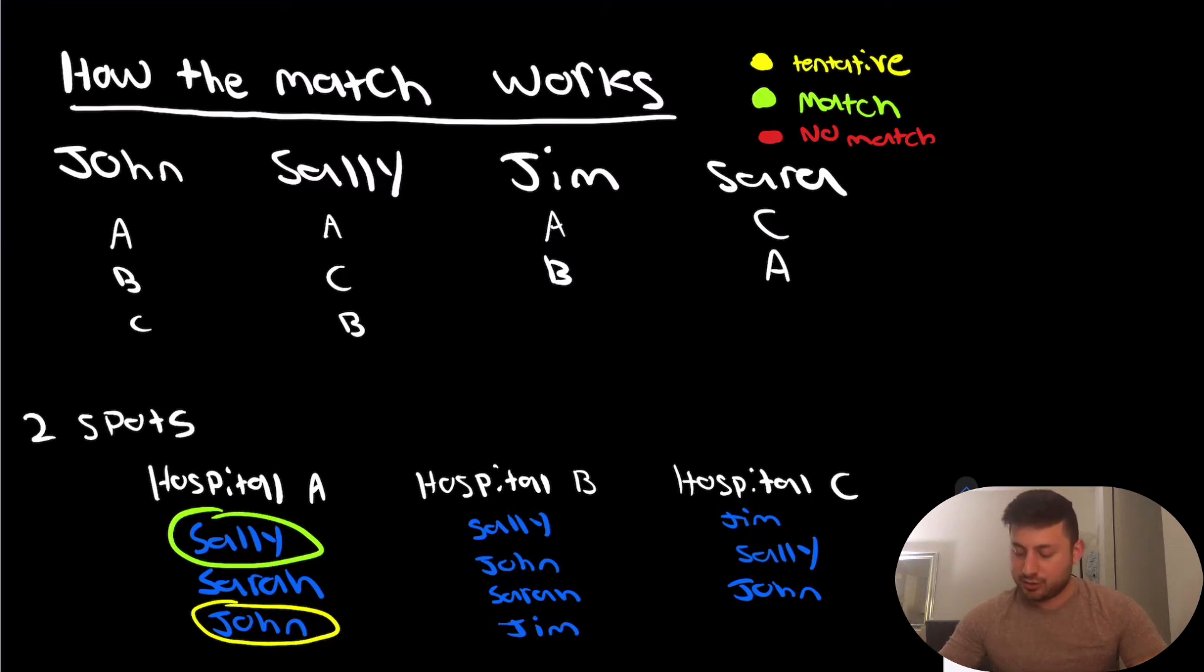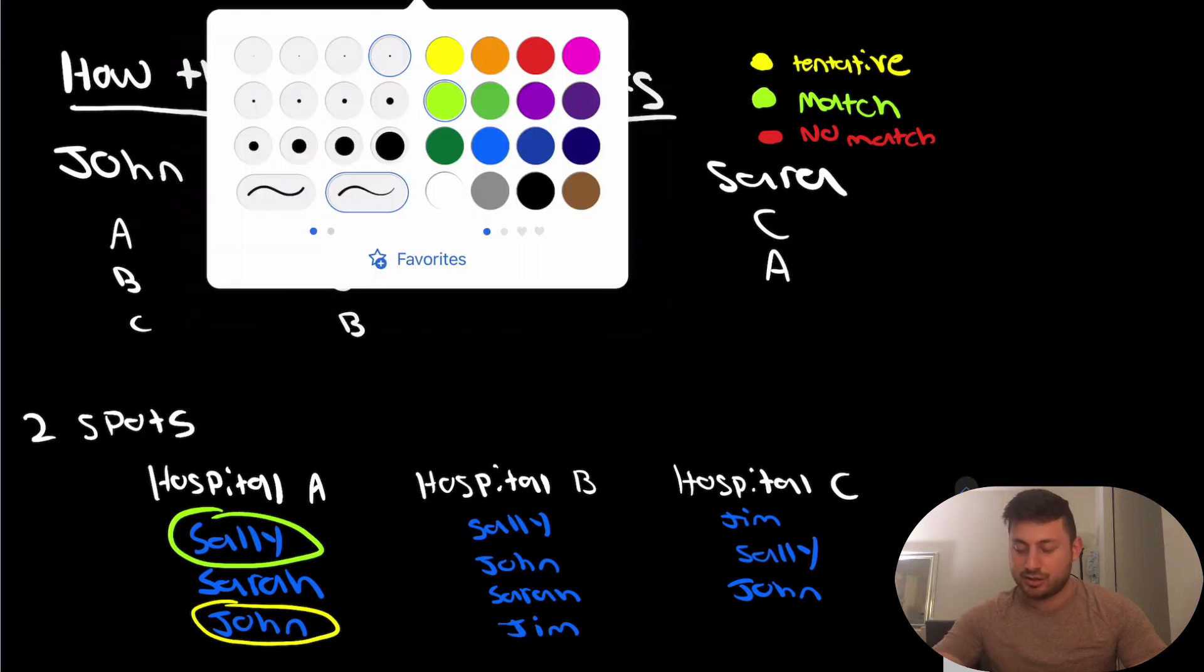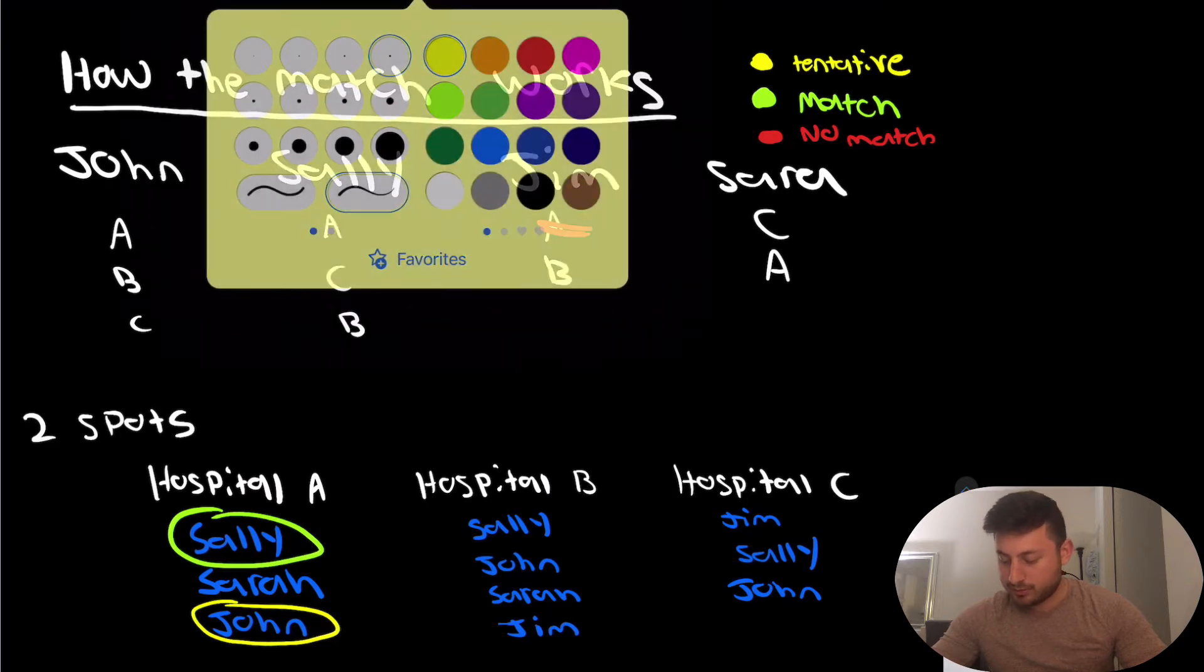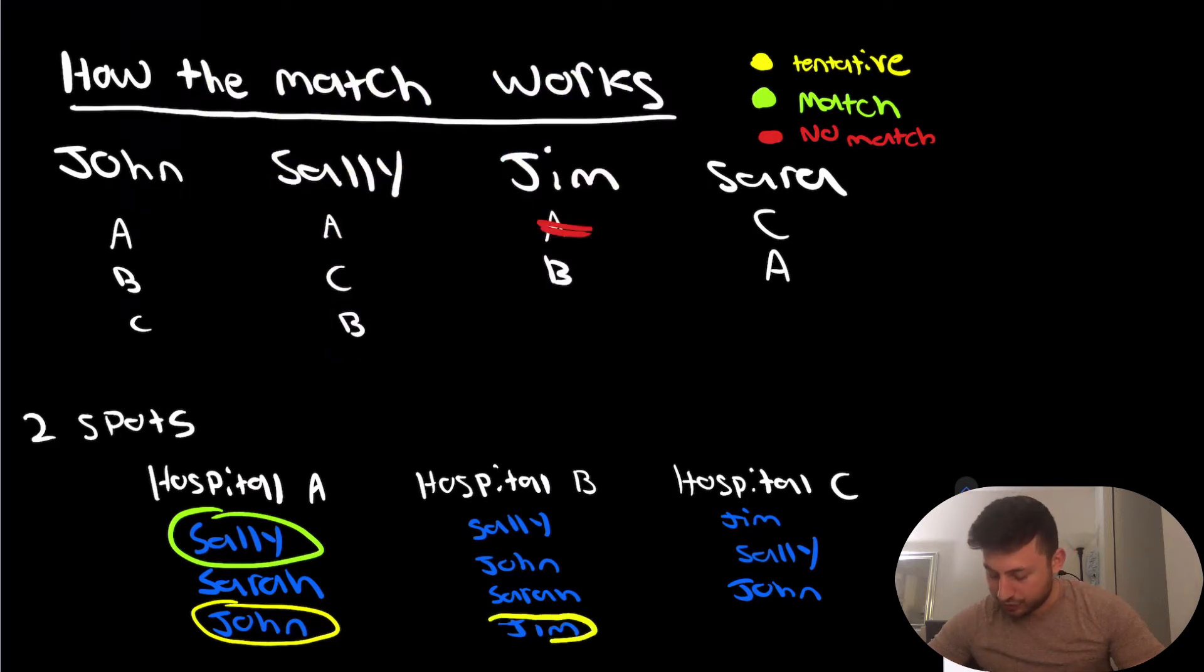So now we're going to move on to Jim. Jim ranks Hospital A number one as well. It's his first choice. But it looks like Jim is not even on Hospital A's rank list. So Jim cannot match at Hospital A, so we're going to cross him out here. Then Jim also ranked Hospital B second, and no one's currently tentatively matched there. So we're going to put yellow for Jim and say that he is tentatively matching at Hospital B.